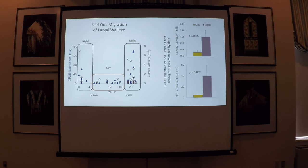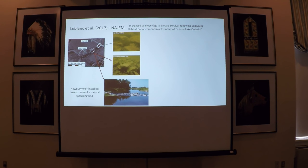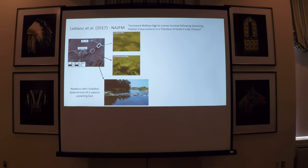We used information compiled for nearly a decade on walleye in Eastern Lake Ontario, and partnered with the U.S. Fish and Wildlife Service's Partners for Fish and Wildlife because of concerns about Kent's Creek through sedimentation and channelization. They installed a Newberry Weir downstream of a natural spawning bed. The weir was installed using angular crushed limestone, creating an engineered riffle to maintain clean substrate and wash off sediment. It was installed in 2013, with the approximate location shown as a dashed rectangle and the natural spawning habitat as a solid rectangle on the map.